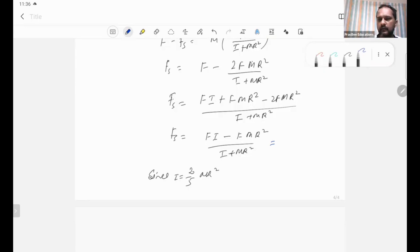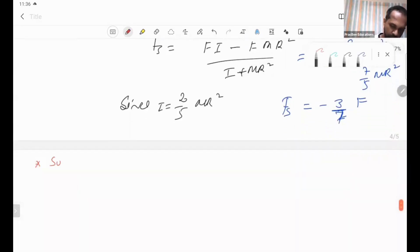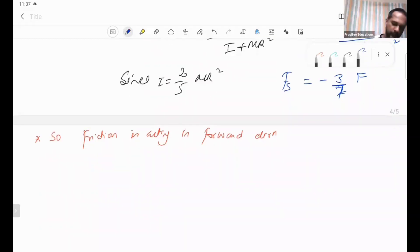MR squared is greater, so the answer that I will be getting is negative. The answer is negative 3/7 F. So what I have to say is that friction is 3/7 F. This means friction is acting in the forward direction.